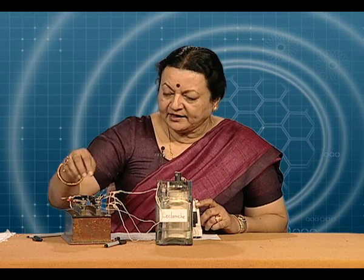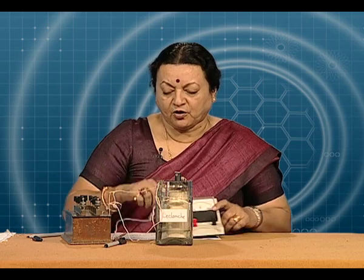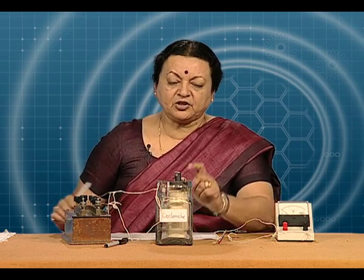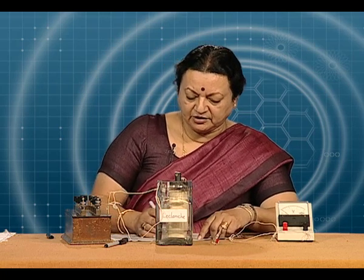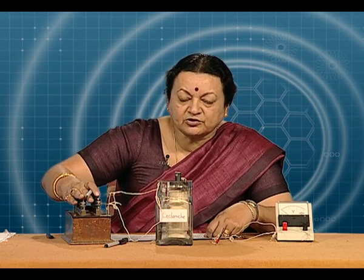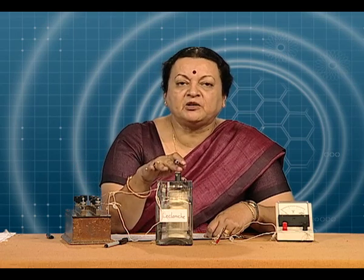We can take that value and calculate the potential difference. The terminal potential difference V is equal to E minus Ir. So we can write E equal to IR plus Ir, where R is the external resistance and r is the internal resistance. In effect, the total resistance is the resistance outside plus the resistance inside, and that multiplied by the current gives the EMF.